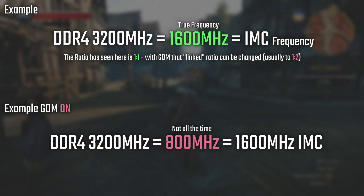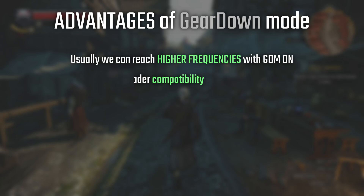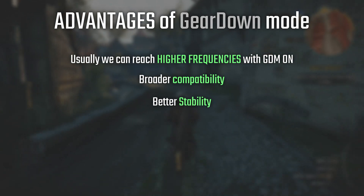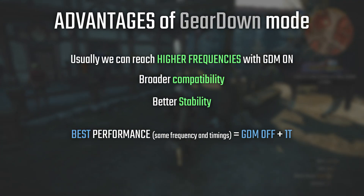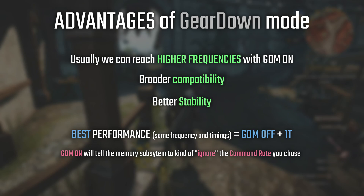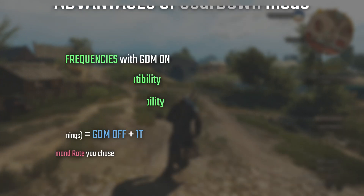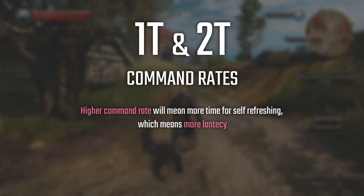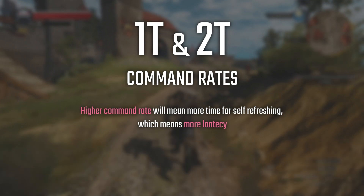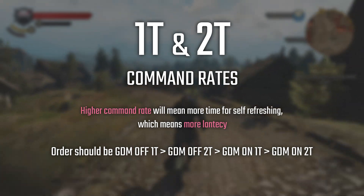So this should be bad, right? Well, not entirely. This conservative way of storing values can potentially allow for higher frequencies, broader compatibility, and better stability — great for the average user. But in terms of real performance, disabling gear down mode and using 1T command rate is the way to go, since when gear down mode is enabled it will tell the memory subsystem to disregard the command rate setting. As for 1T and 2T, they are common rates — kind of waiting states — where a higher number means more waiting time till the memory refreshes itself, so technically the lower the number the higher the performance, but not all RAM kits can run 1T.